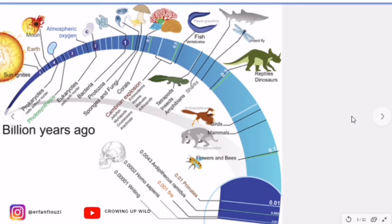The evolutionary history of life on Earth traces the processes by which living and fossil organisms evolved from the earliest emergence of life to the present day. Earth formed about 4.5 billion years ago, and evidence suggests life emerged prior to 3.7 billion years ago, although there is some evidence of life as early as 4.1 to 4.28 billion years ago. It remains controversial due to the possible non-biological formation of purported fossils. The similarities among all known present-day species indicate that they have diverged through the process of evolution from a common ancestor.